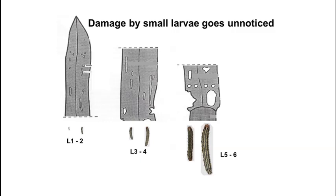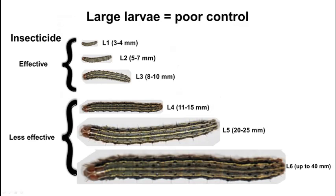It is not easy to see larval damage. On this graph and line drawing we can see the type of damage caused by different sizes of fall armyworm larvae. On the left we have small lesions caused by L1 and L2 larvae. L3 and L4 larvae cause more significant damage like the picture in the middle. The type of damage which we only notice in the field under normal conditions is usually caused by L5 to L6 larvae when damage becomes really visible. And that is when we can no longer control the larvae because they are too big. Large larvae equals poor control.